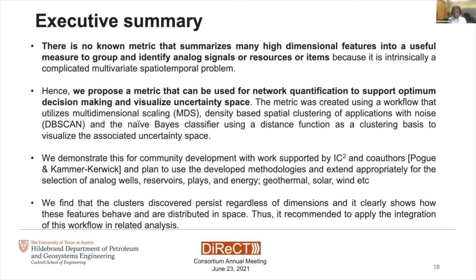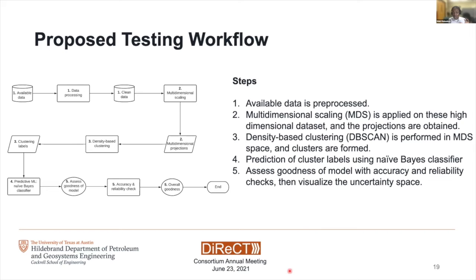To demonstrate the performance of the proposed workflow, this experimental setup is used for testing. Knowing that this workflow can be applied to any high dimensional data sets, let's look at this case study that identifies analog communities in Texas to support optimum economic development and decision making. The steps are: first, pre-process your available data; perform multi-dimensional scaling on it; then perform DB scan clustering on the MDS projections; predict the labels obtained from DB scan using Naive Bayes classifier; assess goodness of model with accuracy and reliability checks; then visualize the uncertainty space and determine similarity scores. A synthetic data generator was created based on existing socioeconomic ranges and known feature relationships for population, household income, commute time, and crime rates, with sampling done using bivariate Gaussian distribution sampling.